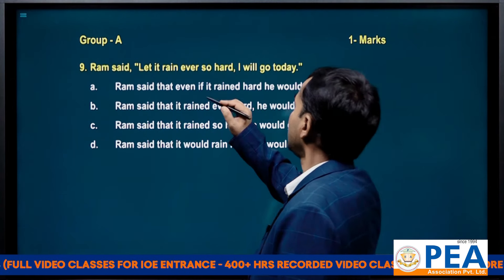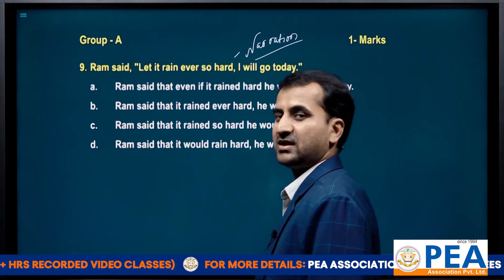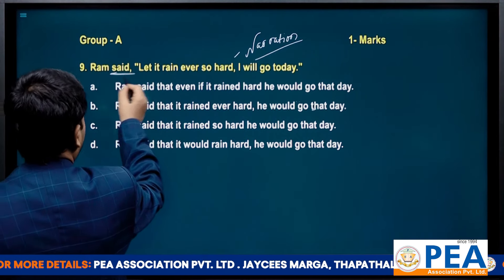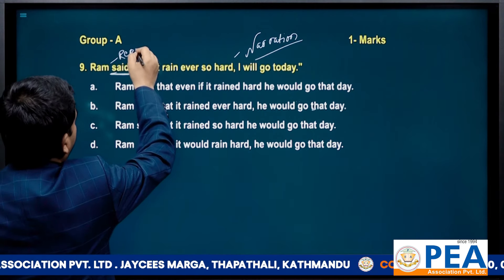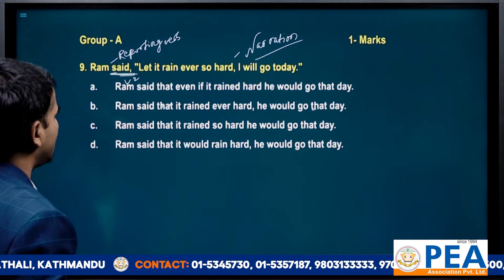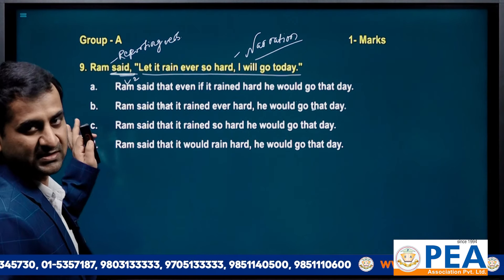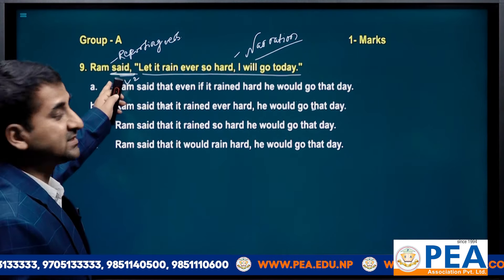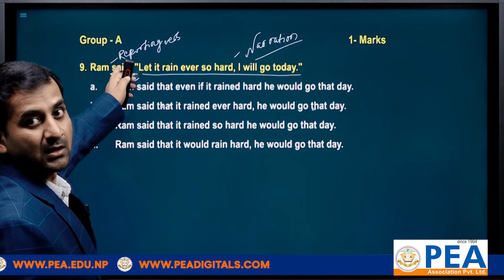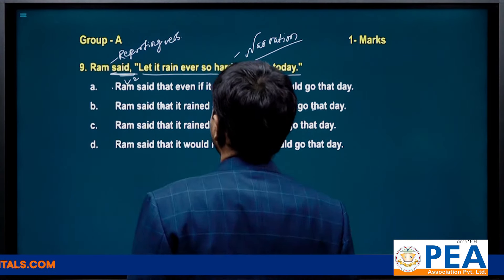Another question from narration — direct and indirect speech. Here you need to see the reporting verb. The reporting verb is in past tense (V2 — simple past form). Since the reporting verb is in past tense, the tense of the entire reported speech changes. Had it been in present or future tense, the tense of the reported speech would not change.